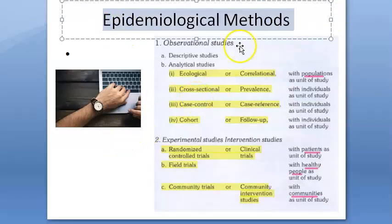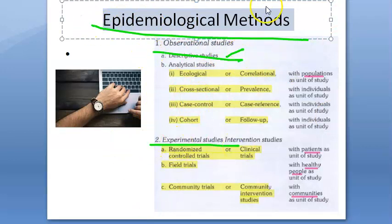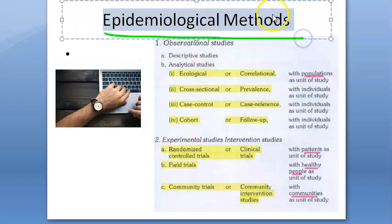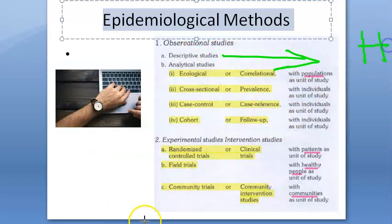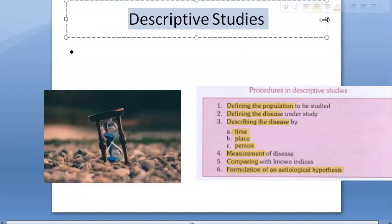In this video, let us look at descriptive studies. Under epidemiological methods, we have observational and experimental studies. We have already seen the introduction in the previous video. Under descriptive studies, at the end you will just come up with a hypothesis. You're going to come up with some hypothesis, which is very incomplete. If you want to prove it, you'll have to do all these analytical studies.